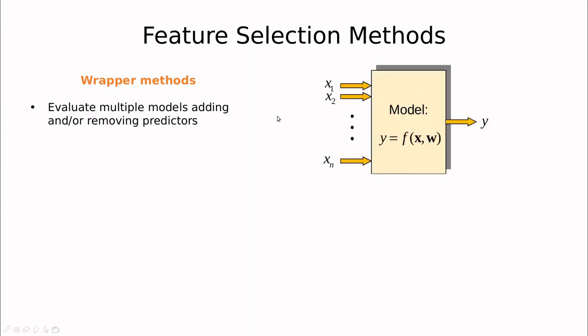The first one is called the wrapper methods. In this case, you evaluate multiple models and you discuss what happens when we are systematically adding or removing features. For instance, you have a model with n inputs. One method is starting with all of them and remove one, see how this performs, and then iterate, removing x2 or x1, and so on and so forth. And then you have a clear picture of relative importance of each of the variables.